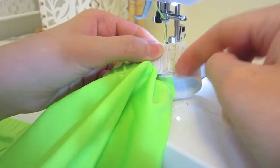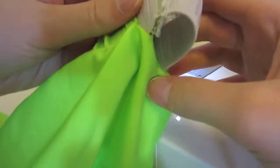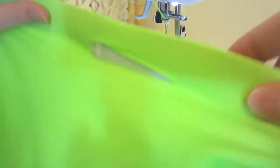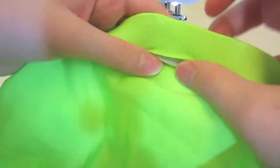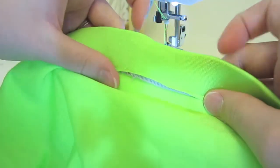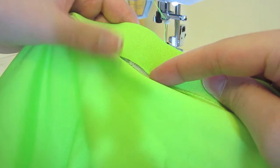After you have your elastic sewn together so that it won't come apart, you're just going to pull it through the rest of the way and it should just cover up like that. And next we're just going to sew that down.